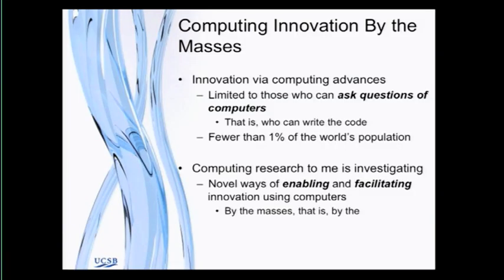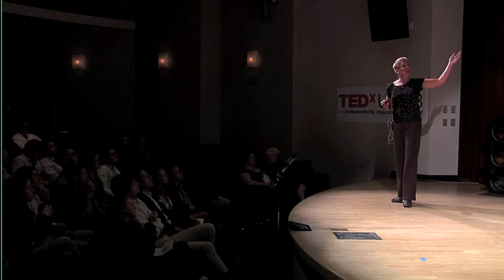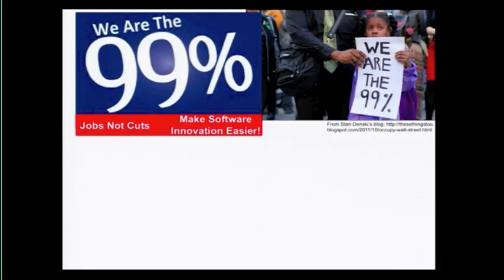My argument is that what computing research should be doing in a digital society is identifying the ways of enabling and facilitating innovation using computers by the masses — not just by that few elite one percent, but instead by the 99 percent, by everyone else. That's what I'm passionate about: making software innovation easier — not for me, not for my students, not for my colleagues, although I do love them. I'm interested in making innovations that allow her to innovate, because it's only when we're all innovating using computers that we have the potential for changing the world. I'm Chandra Krintz. That's my project. Thank you for listening.